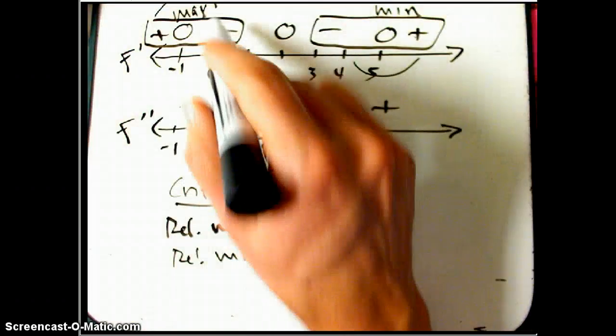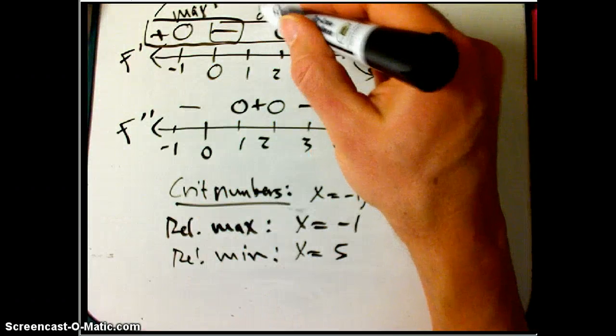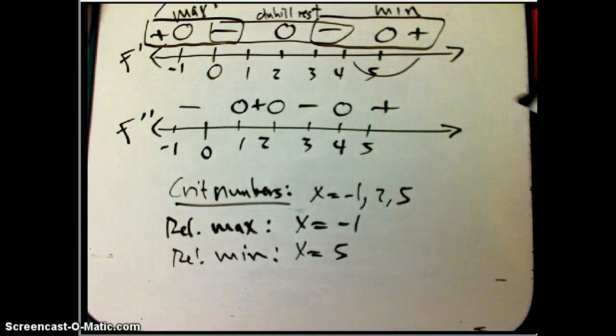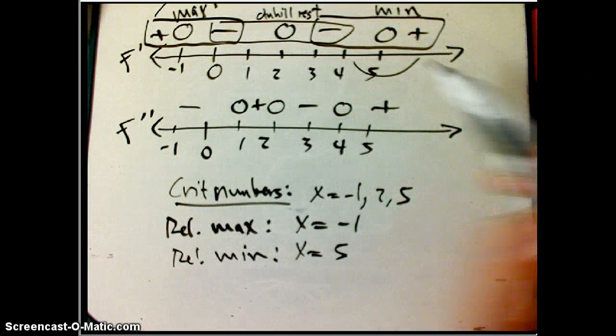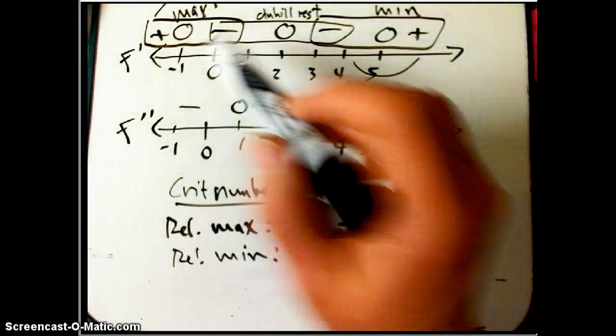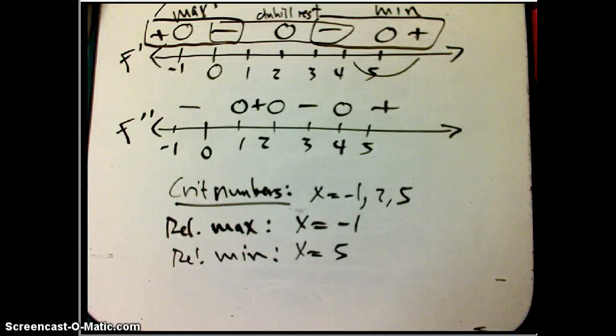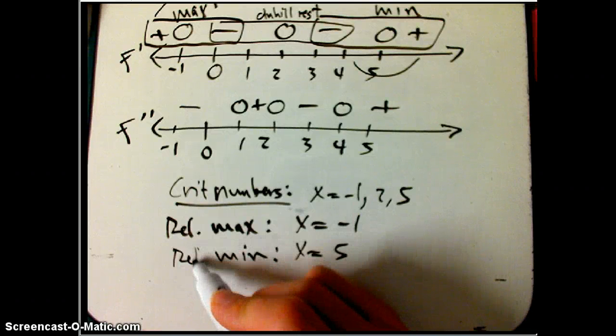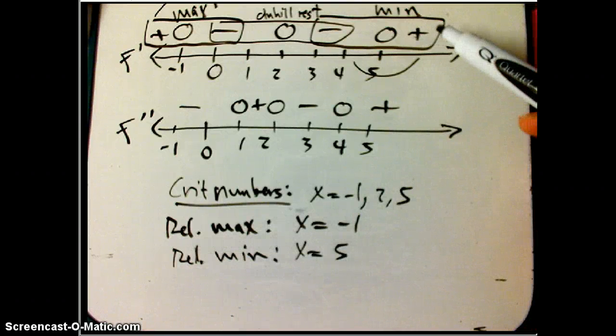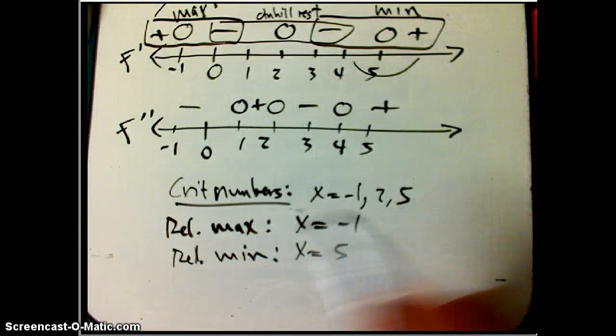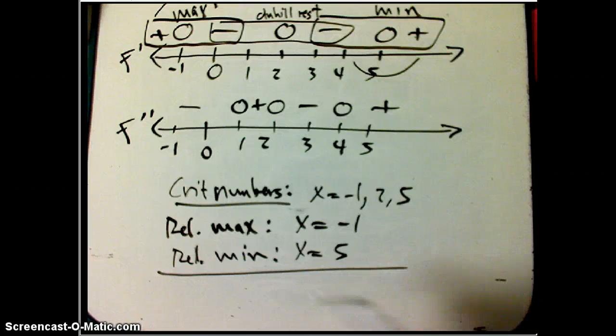And then this one is a critical point that's a downhill rest. I'm going to sketch a graph of this function at the end. We're getting already some sort of picture. It's a hump, downhill rest, then sort of a bowl. That's using the first derivative test for that. And that's really all you need to do to find relative maximum if you've got all that information.